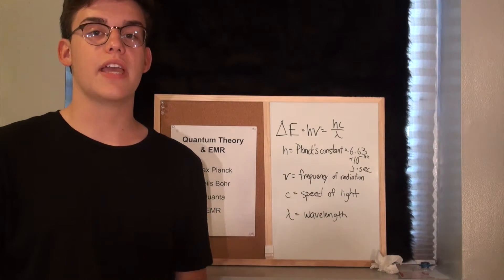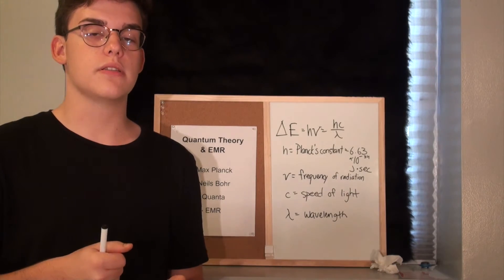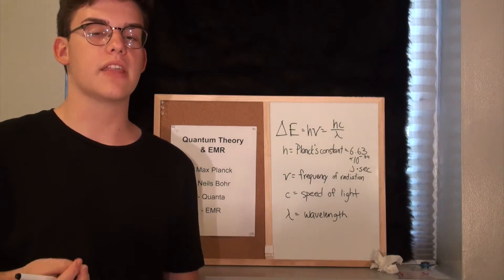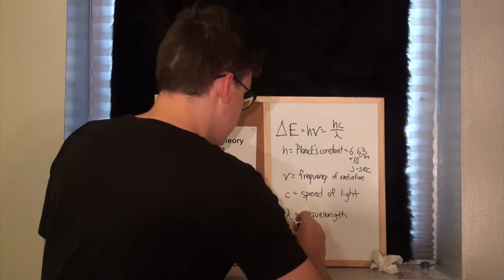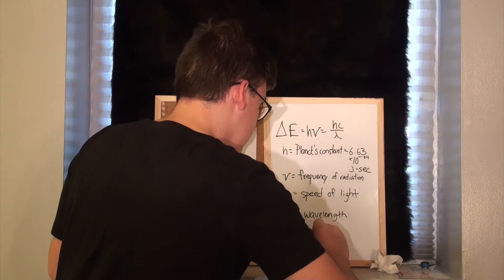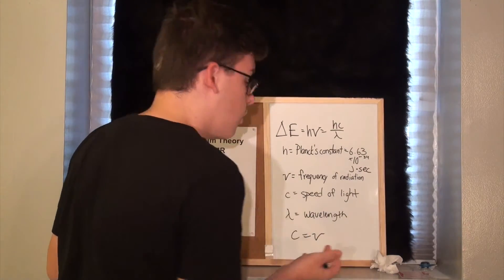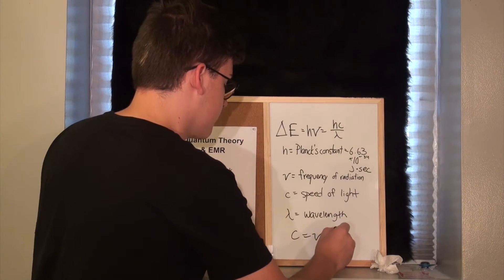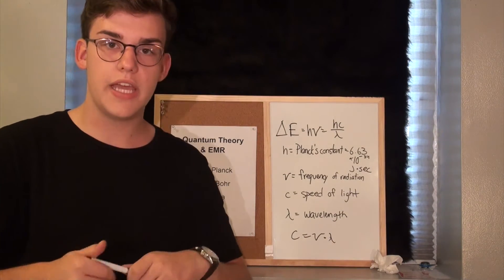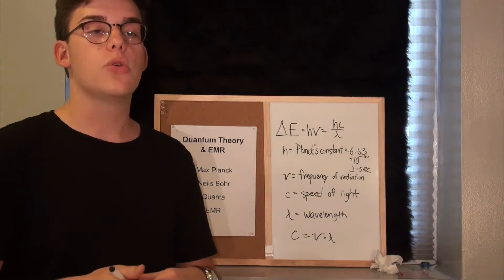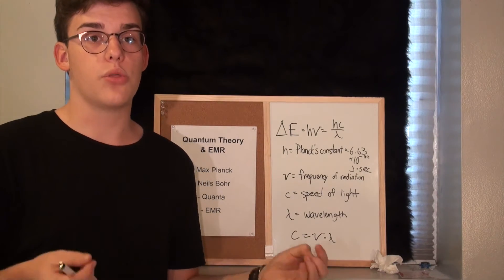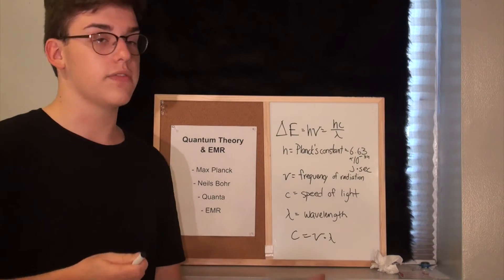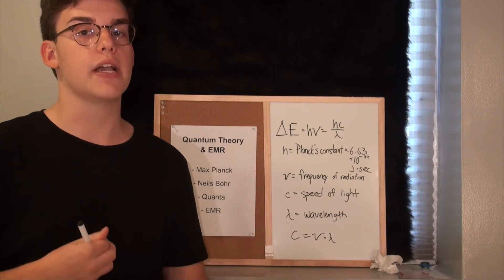The interesting thing about the speed of light is that you can actually determine the frequency or the wavelengths using the equation C is equal to nu, or the frequency of the radiation, times lambda. So if you know the speed of light and the frequency, you can determine the wavelengths. If you know the wavelength and the speed of light, you can determine the frequency, and vice versa.